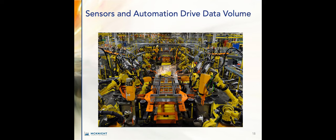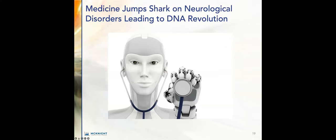Ninth trend: sensors and automation will drive data volume. AI is going to dominate factories and begin to serve in many roles in society. We're going to start to see AI augmenting teachers, cooks, pharmacists, law enforcement officers, athletes, and other professionals — with universal translation as well. Hundreds of sensors are going to be installed in our clothes, homes, and overall environment, and all these sensors and automation will be a top factor in driving overall data volume in the new year.